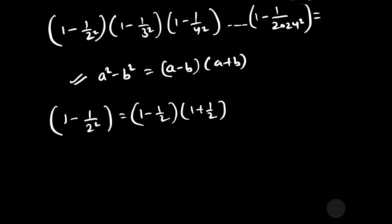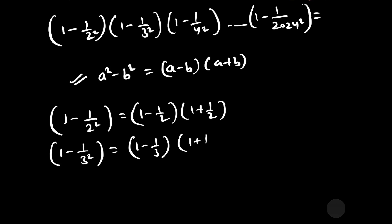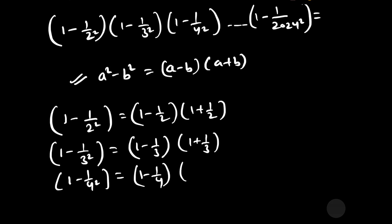Further, we can write 1 minus 1 by 3 squared as (1 minus 1 by 3) into (1 plus 1 by 3). The third term, 1 minus 1 by 4 squared, can be written as (1 minus 1 by 4) into (1 plus 1 by 4).